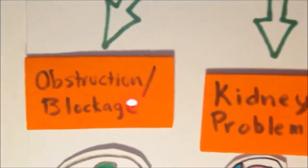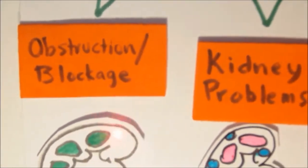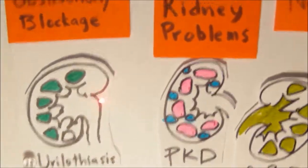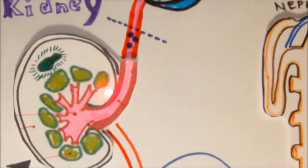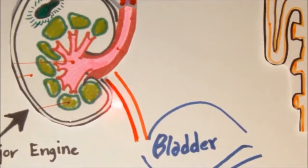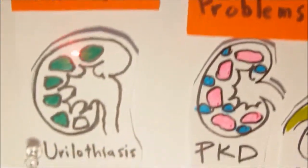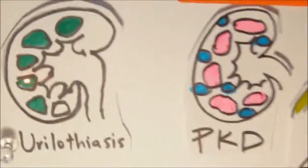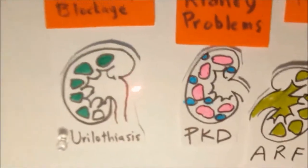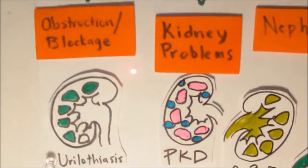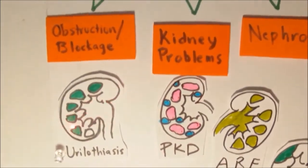First is obstruction or blockage, and this entails whether or not the blockage is right within the kidney, such as maybe in the renal pelvis or the renal medulla, or post-renal, which means the blockage or the kidney stone is either within the ureters or in the bladder. The disease that fits perfectly within this category includes urolithiasis, which is urinary calculi, or kidney stones.